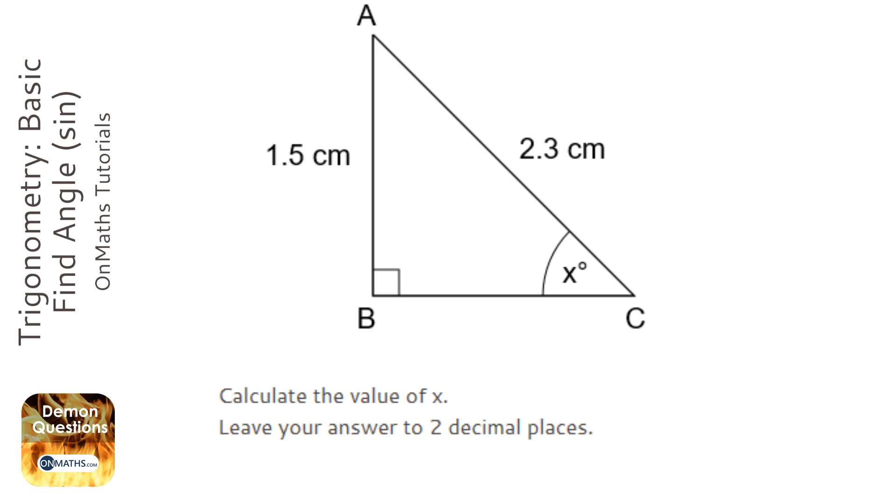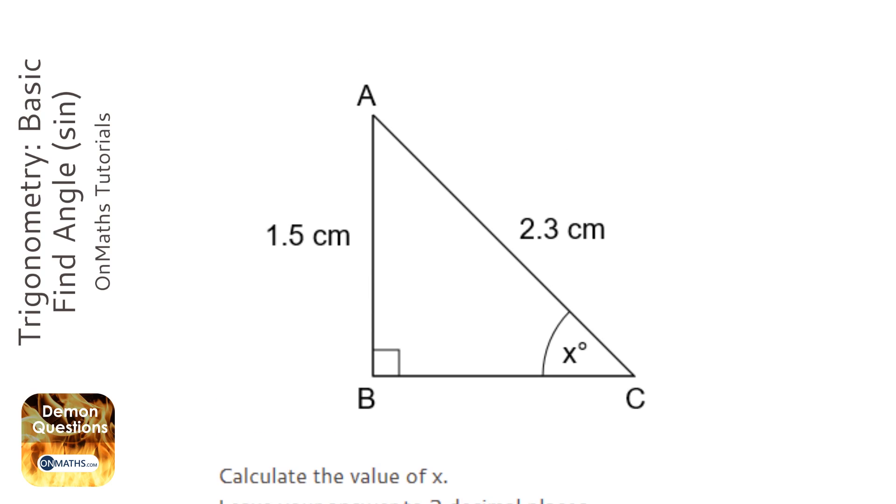Now whenever we've got two lengths, an angle, and a right angle triangle, we're using trigonometry. And the first step of trigonometry is to label the hypotenuse. So you go opposite the right angle, and that's the hypotenuse.